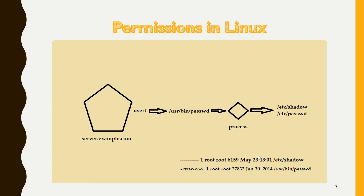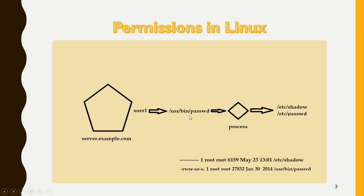Let's understand this with another diagram. Here user1 is firing the command /usr/bin/passwd. A process will be initiated, and that process is going to update the /etc/shadow file. Let me first take the ideal condition where the file does not have setuid. User1 fires this command, which has full read, write, executable permissions for user, others, and everyone. A process will be initiated.